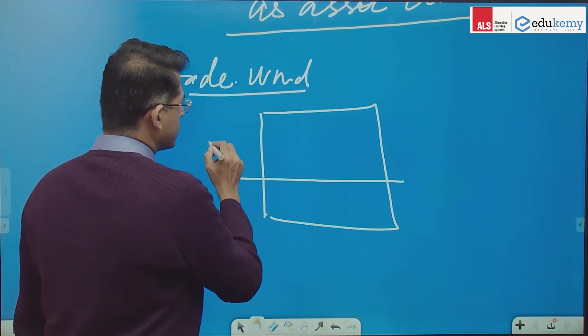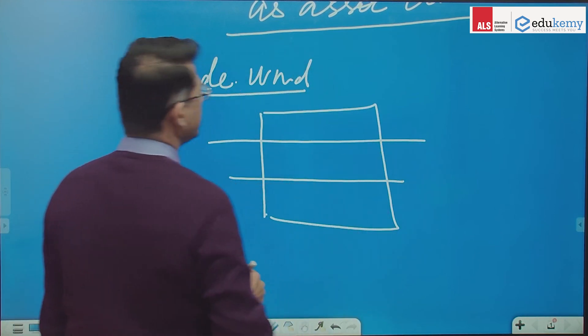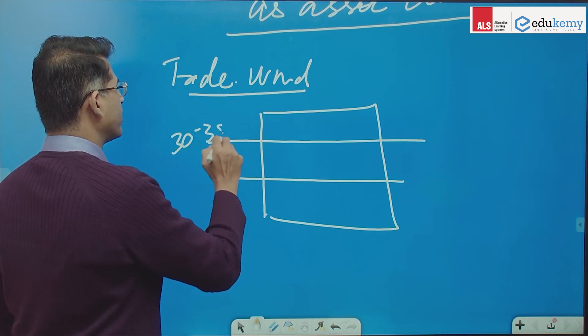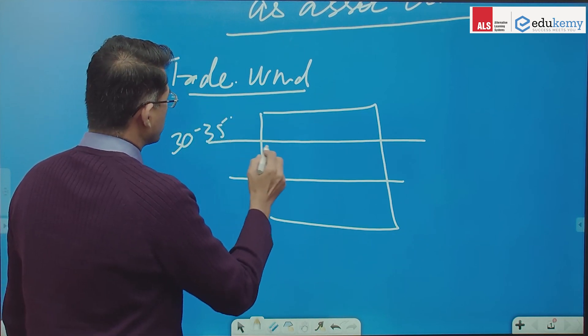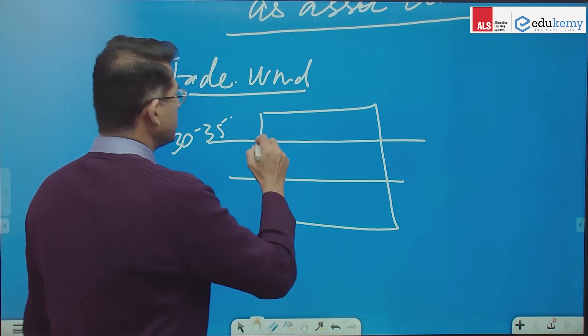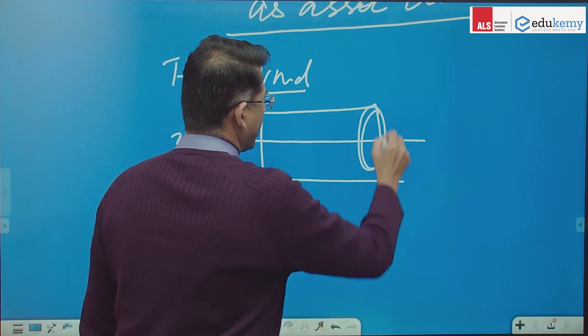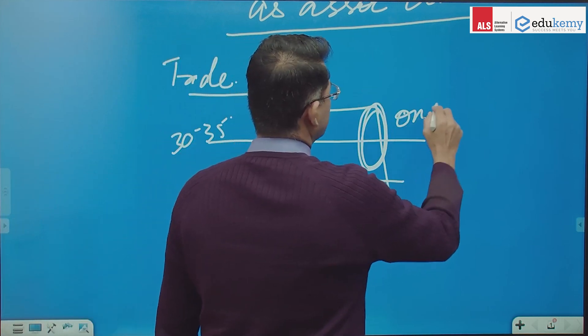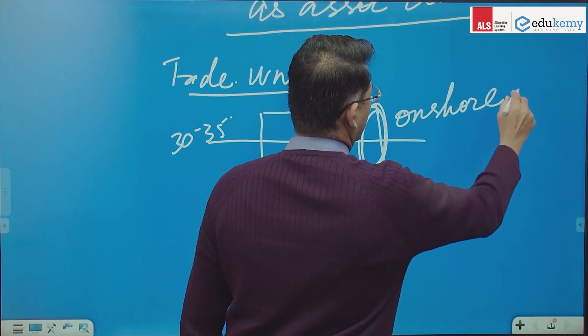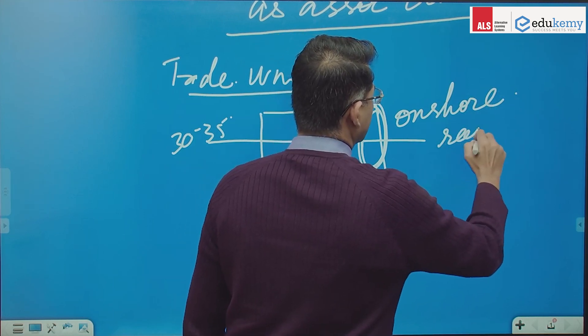this is the subtropical belt maybe, this is 30, 35 degrees. So on this side we have onshore winds, it is rainy,